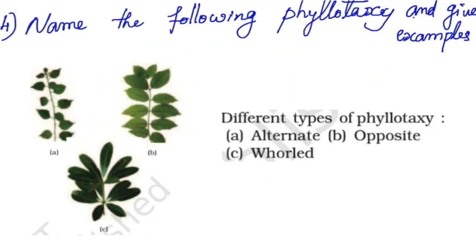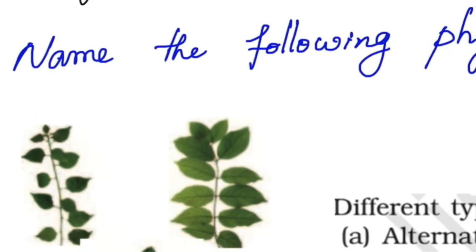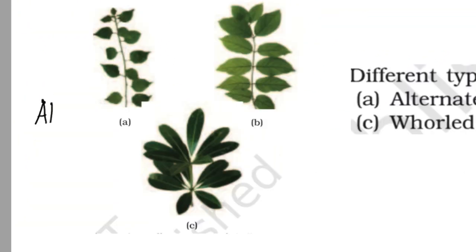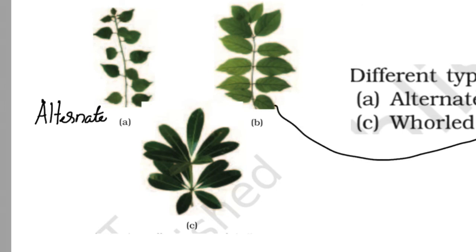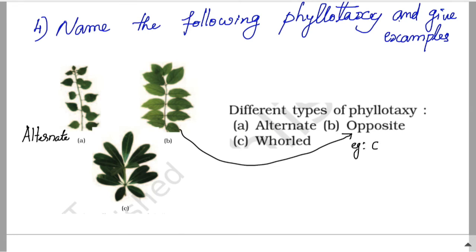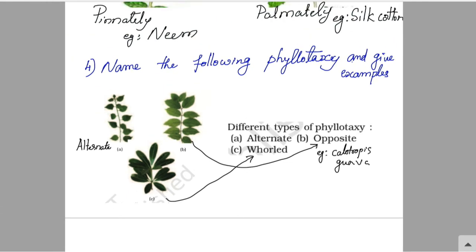Name the following phyllotaxy and give examples. A is alternate phyllotaxy — example: China rose, mustard. B is opposite phyllotaxy — example: Calotropis and Guava. C is whorled phyllotaxy — example: Alstonia and Nerium.